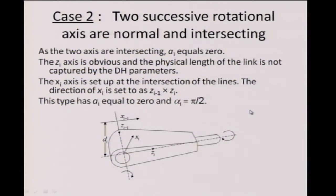Now we look at the second case where we have 2 rotation axes — successive rotation axes which are perpendicular to each other and they intersect each other. We already saw that this is not a very unusual case; it keeps happening. If the axes intersect, the length of the common normal goes to 0, so a_i is 0.